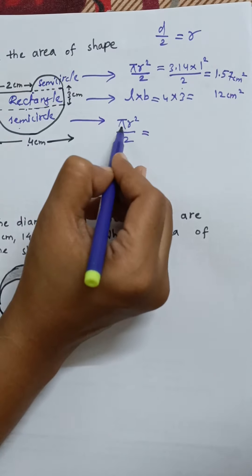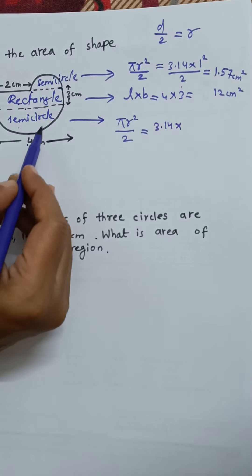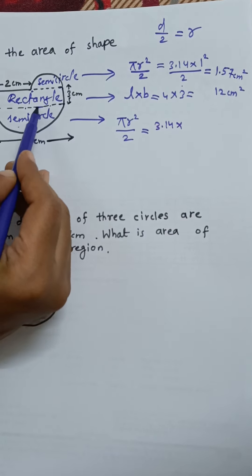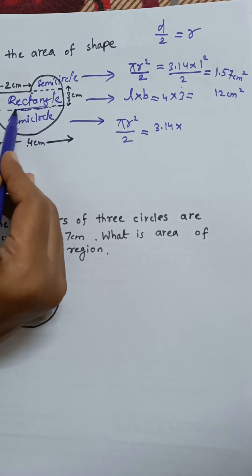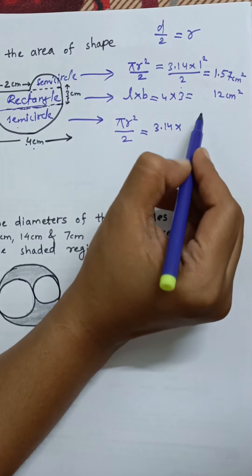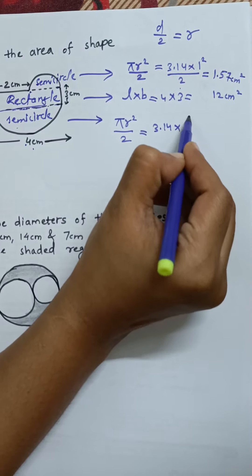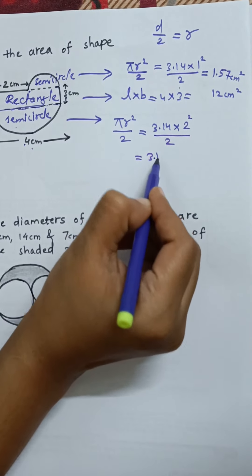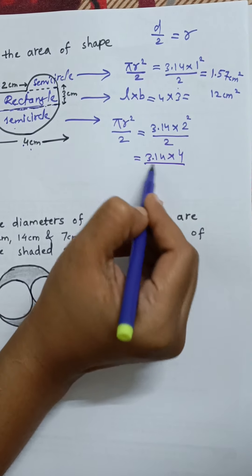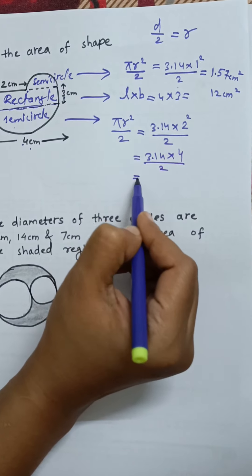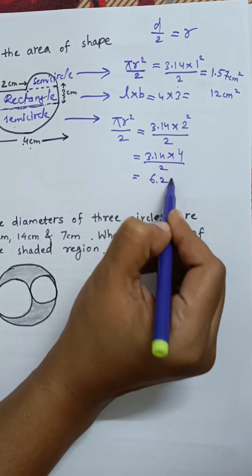At last, this semicircle we have to find out. Pi is 3.14. Now if we speak about the radius, radius is half of the diameter. Here this diameter is 4, so 4's half is 2, and we need to take 2 square. So 3.14, 2 square is 4 by 2. If we solve it, we'll get 6.28.